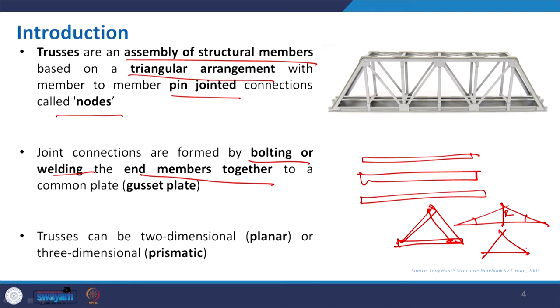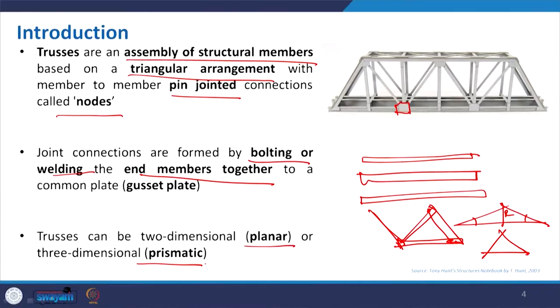We have discussed the rise when we discussed arches, shell structures, and dome structures — we talked about the rise and how depending on the angle we can have a broad angle or very narrow angle. Now whenever multiple members are connecting — more than three members — with the help of a plate, this is basically called a gusset plate. Trusses can be two-dimensional or three-dimensional: when 2D we call it planar, when 3D we call it prismatic.